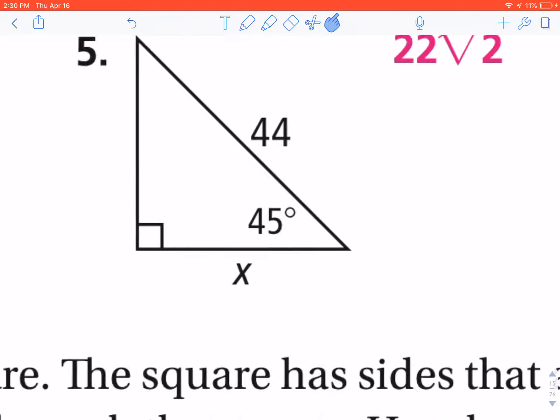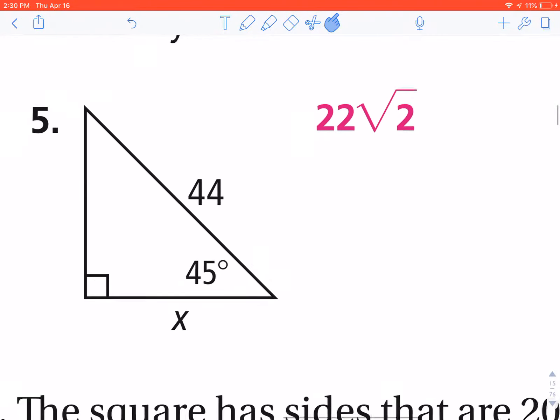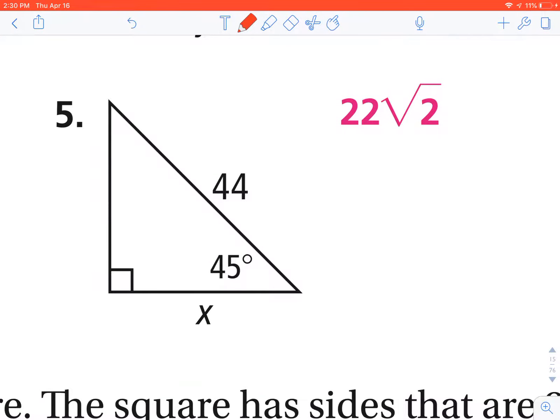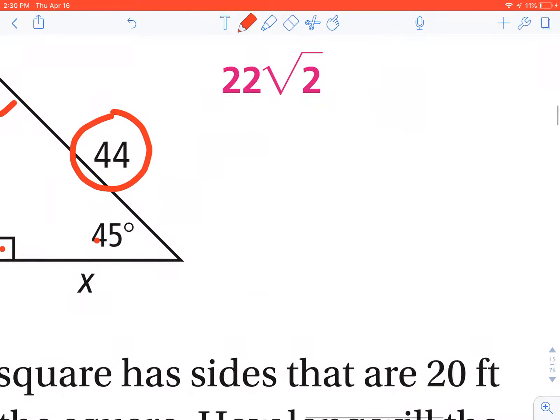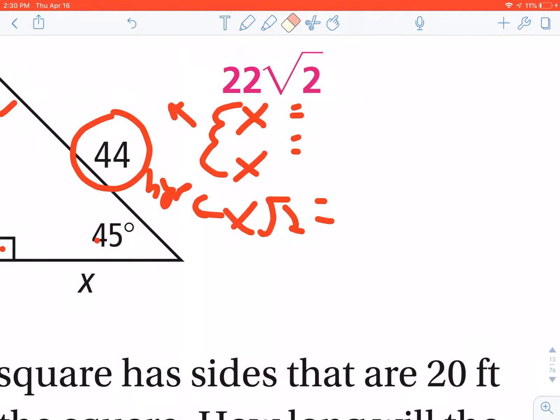This is your worst case scenario because it's a 45-45-90 triangle, but I've given you the hypotenuse and I'm asking for a leg. So if you make your table: x, x, x radical 2. The x's represent your legs, x radical 2 is your hypotenuse.